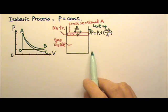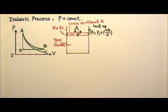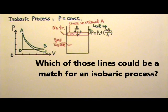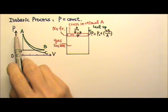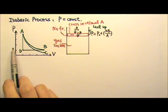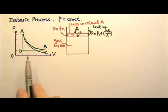If we plot this process on a PV diagram, which of those lines do you think could be a match? Since the pressure is a constant, the process should be a horizontal line, so it is D to B. And we usually draw an arrow to show the direction of the process.